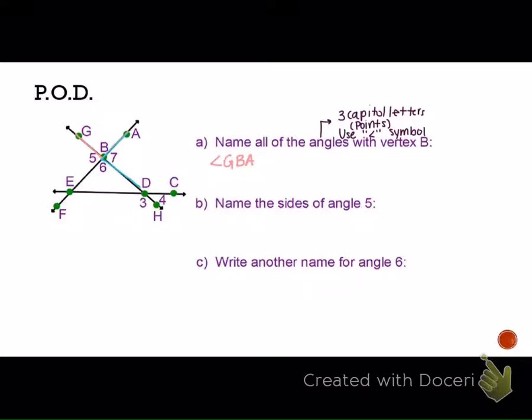Abby, give me another one. Angle ABD. Different colors in geometry might be helpful. Katie, give me another one. Angle GBE. Carmichael, give me another one. What's the last one up there? We've gotten this one, this one, and this one. Which angle have we missed?